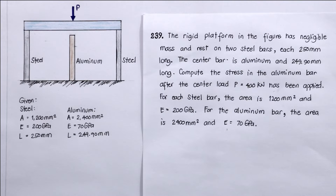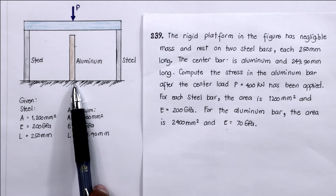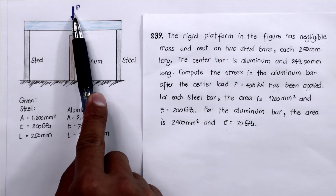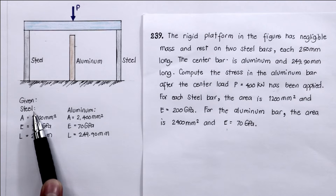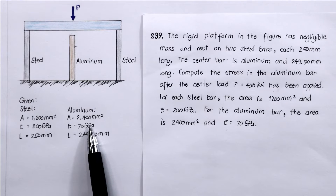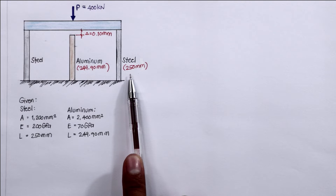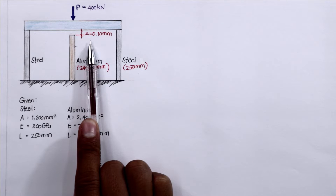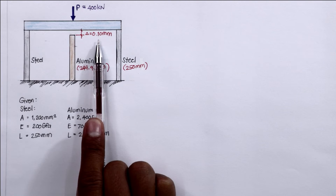Problem number 239. The rigid platform in the figure has negligible mass and rests on two steel bars each 250 mm long. The center bar is aluminum and 249.90 mm long. Compute the stress in the aluminum bar after the center load P = 400 kN has been applied. Each steel bar has area 1200 mm² and E = 200 GPa; the aluminum bar has area 2400 mm² and E = 70 GPa. The gap equals 250 − 249.90 = 0.10 mm.